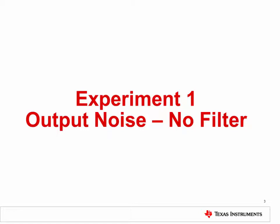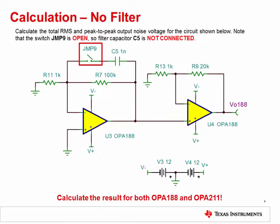In Experiment 1, we'll determine the total output voltage noise in a circuit with no filtering. First, calculate the expected total RMS and peak-to-peak output noise voltage for the circuit shown, using the techniques and equations given in the noise lecture. Note that switch JMP9 is open, so filter capacitor C5 is not connected. Make this calculation twice: first with the OPA188 selected for U3 and U4, then with the OPA211. The different parameters of these op amps will give you different noise results.